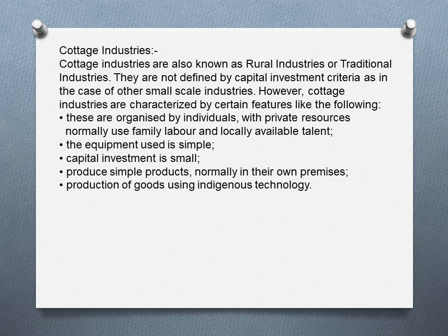Cottage industries are characterized by certain features. They are organized by individuals with private or personal resources. They normally use family labor and locally available talent. The equipment used is simple, and the capital investment is very small. Producers make simple products — normally in their own premises — such as pots, embroidery, handicraft work, and production of goods using indigenous or old technologies. These are the kinds of industries described under the MSMED Act 2006.